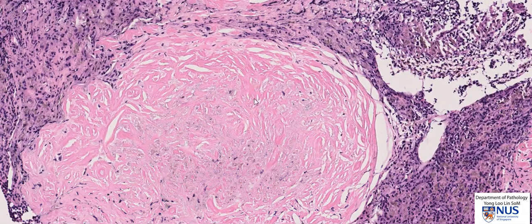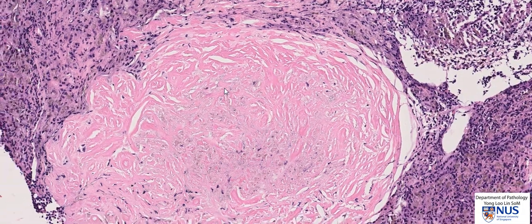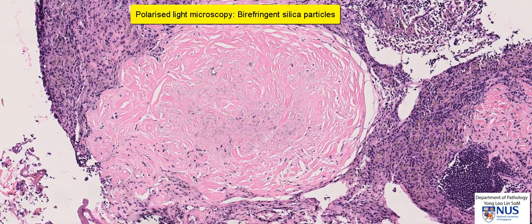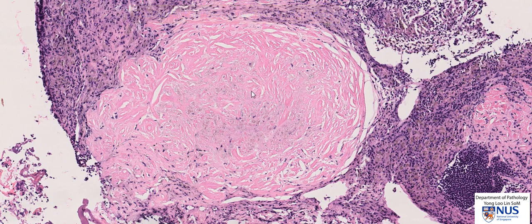One interesting feature is that if we were to perform polarized light microscopy, we would be able to see birefringent silica particles. So this dense collagenous appearance is very classical for silicosis.